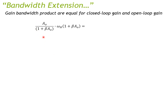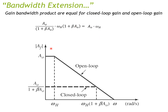So if I multiply the gain and corner frequency for the closed loop, I get the same result as for the open loop. The takeaway is: when you add feedback to your basic amplifier, the gain reduces, but in exchange you can extend your bandwidth. There are trade-offs involved.